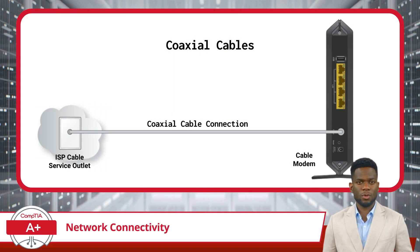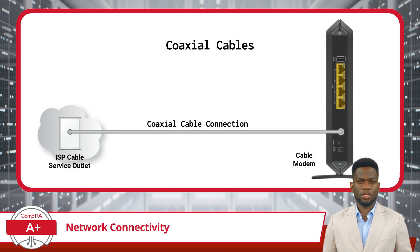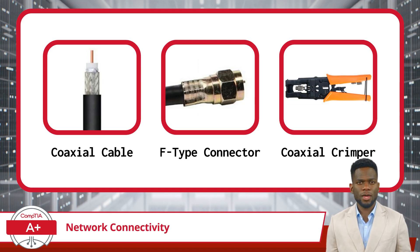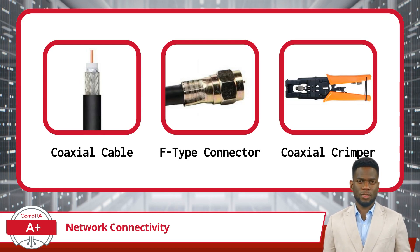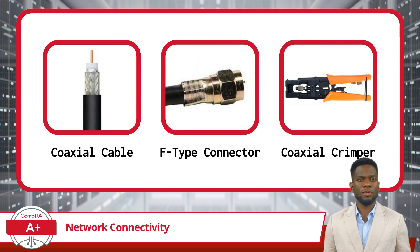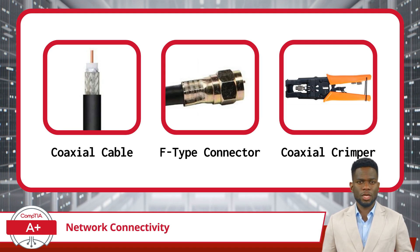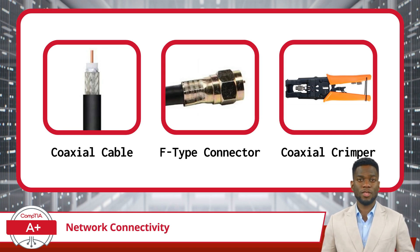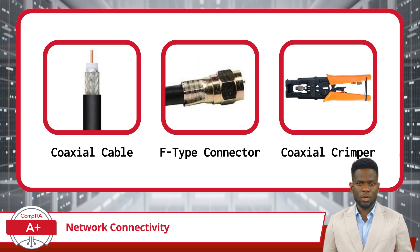Next, we have coaxial cables. These copper cables are commonly used in broadband internet connections, particularly in cable internet services. Coaxial cables are specially designed to ensure that digital signals travel reliably over long distances. They consist of multiple layers, including a central conductor, a dielectric insulator, a braided shield, and an outer insulation layer. At each end of the coaxial cable, F-type connectors are typically attached, playing a crucial role in establishing connections between devices such as cable modems and the cable network, enabling high-speed internet access. A coaxial crimper is often used to attach F-type connectors securely, ensuring a proper and reliable connection for uninterrupted internet service.